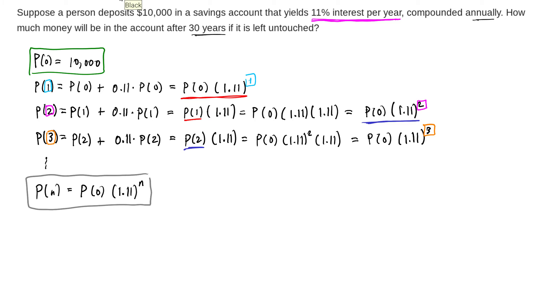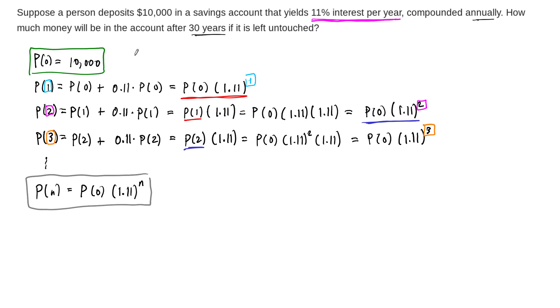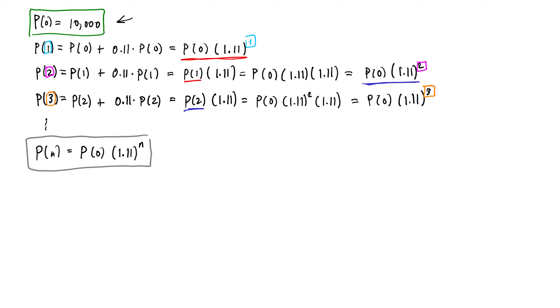Now, the question was to figure out how much money is in our bank account after 30 years. And for that, we need to go back and actually plug this in here, the actual initial investment that we made. So what we determined then is after 30 years, P(30), this is the amount of money, is going to be our initial investment, 10,000 times 1.11 to the 30th power.